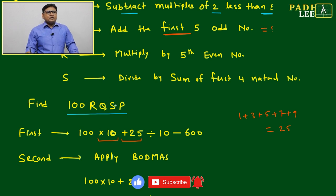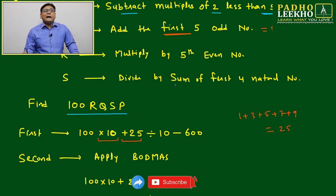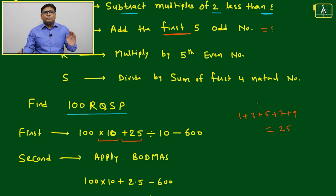Then here plus 25. Next is your S. S represents divide by sum of first four natural numbers. First four natural numbers, how much is it coming? This is also 10.